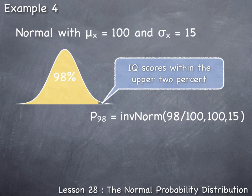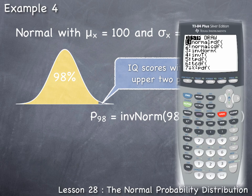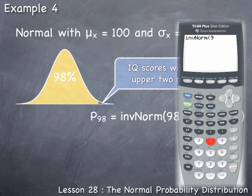Now we can enter the inverse norm command on the TI-84 calculator. It's found by going to the distribution menu: press 2nd DISTR, arrow down to find inverse norm, press Enter. Then type in 98/100 for the 98th percentile, comma 100 for the mean, comma 15 for the standard deviation, close parenthesis, and Enter.